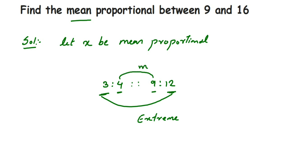Now they have given us to find the mean proportional between 9 and 16, and we assumed x is the mean proportional, which means x takes the place of the mean values. Remember, this is only applicable if the given ratios are in proportion — meaning the ratios are equal, as indicated by the double colon symbol.